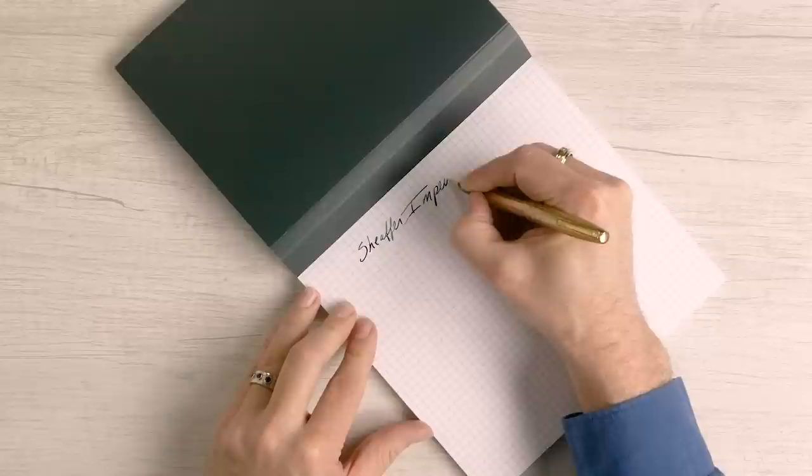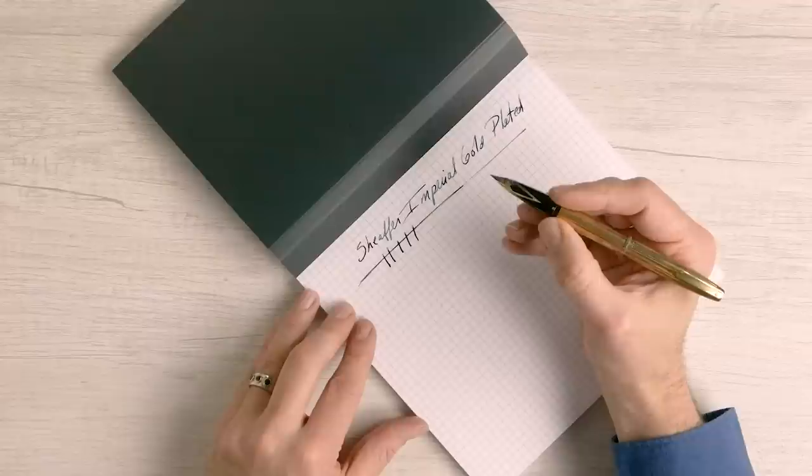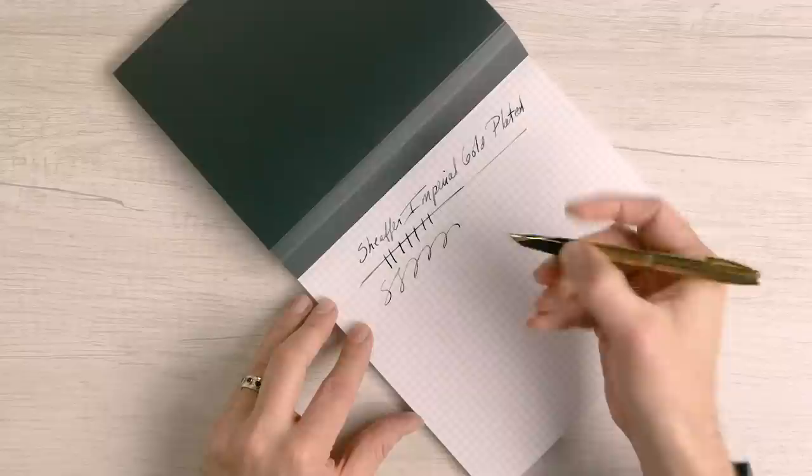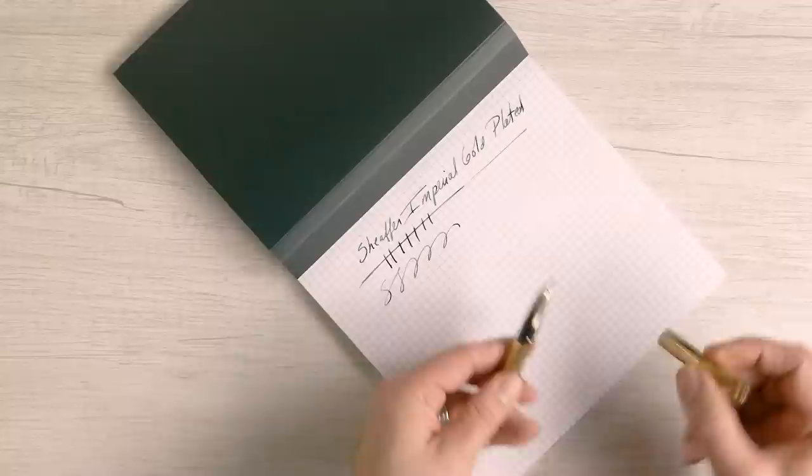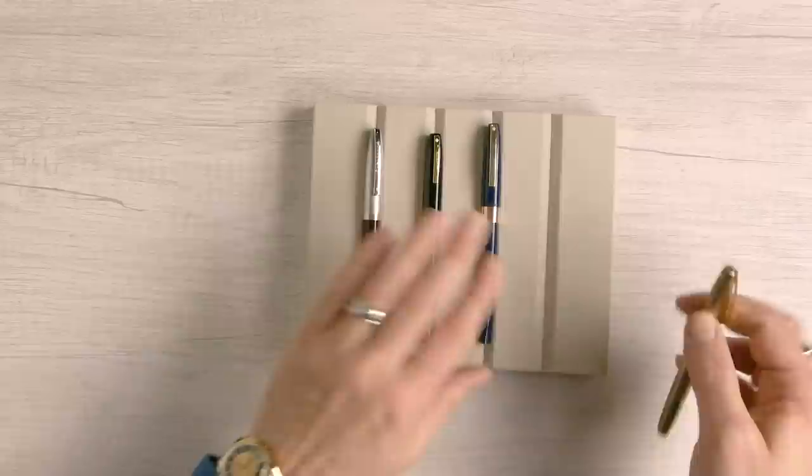Some models had stainless steel nibs, some models had gold. Really a nice writing pen, and that stub nib is a little more unusual than your standard fine, medium, broad that you typically see on your Imperials, but very smooth like you would expect a Schaefer nib to be. Let's compare it with a couple of other examples of other Imperials because there's quite a large family of Imperials.